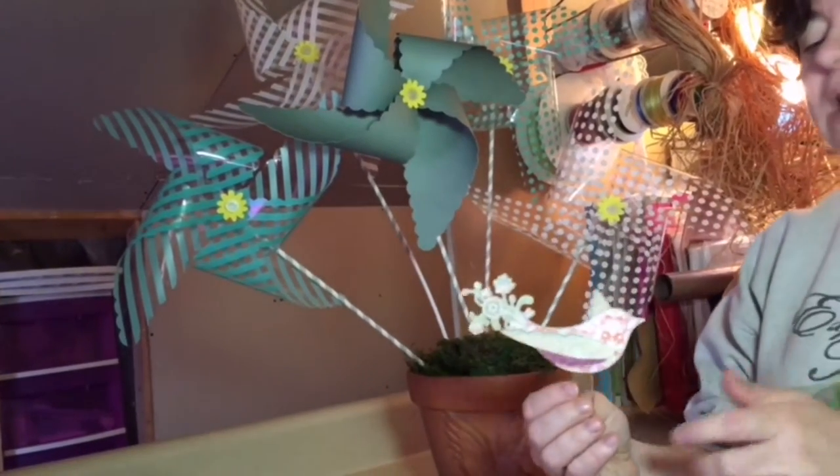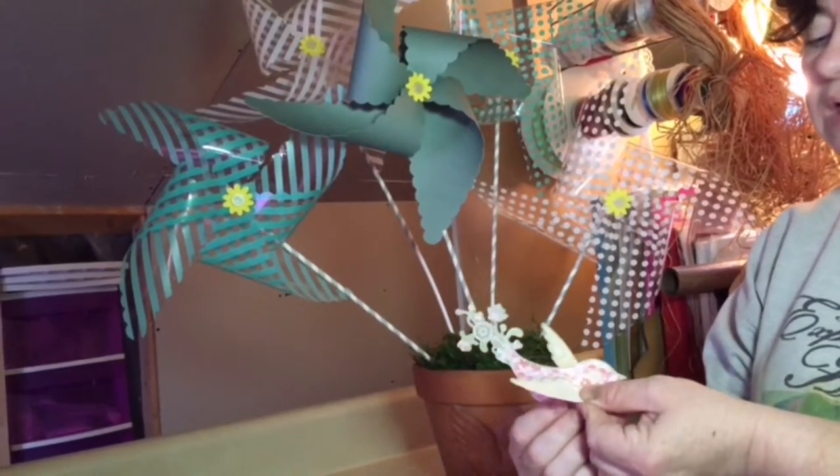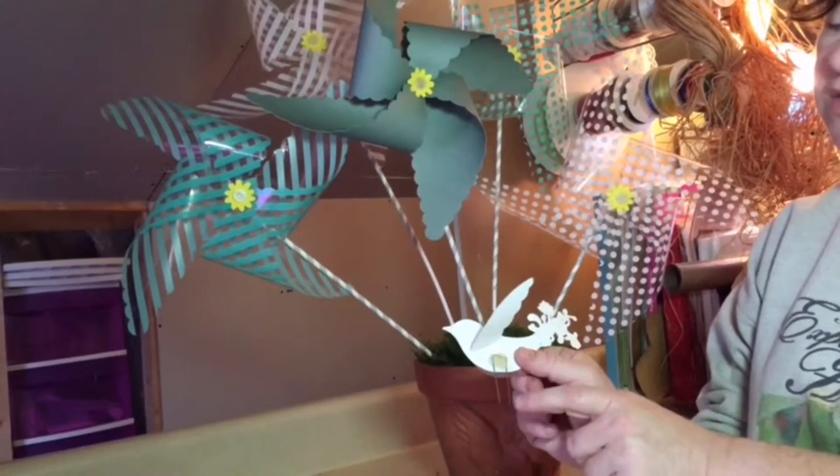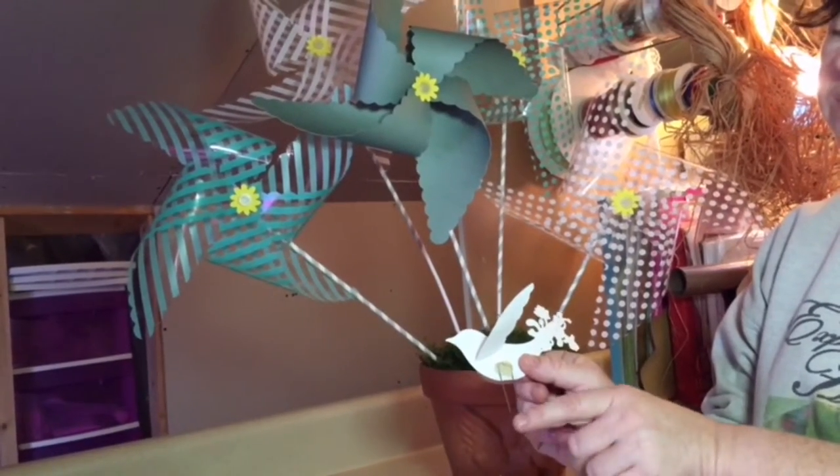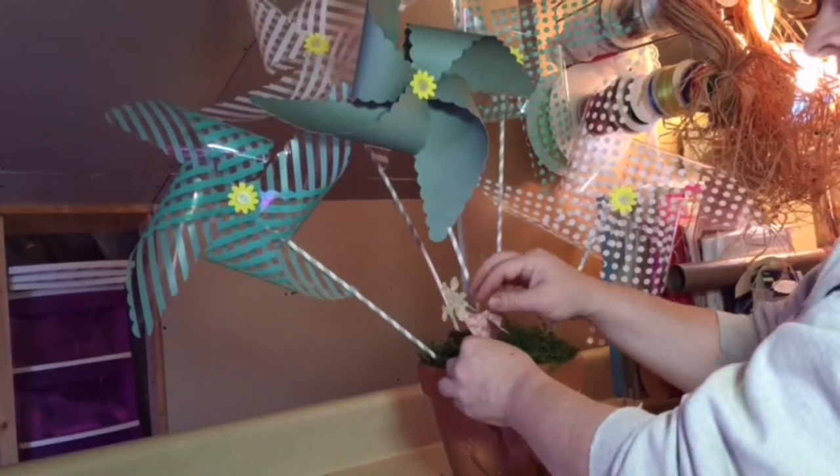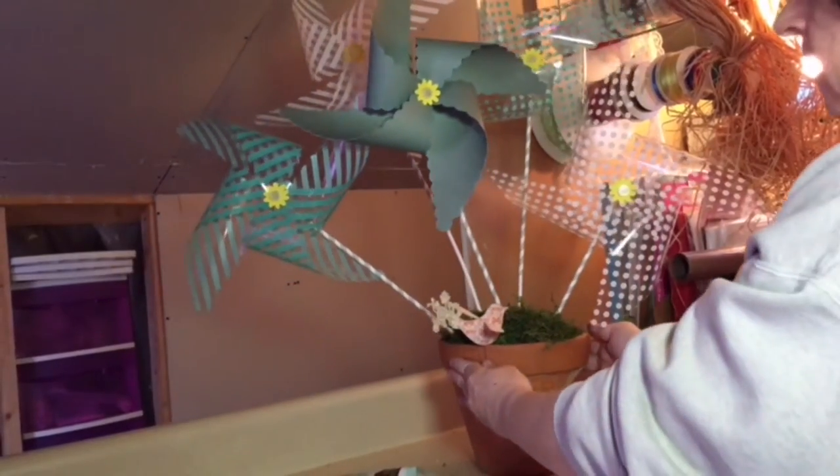This bird I cut out with my Cricut Imagine. I put the coloring on it with the Cricut and everything, and I've used a dot of hot glue to glue this florist pick on. All I'm going to do is slide it right there like that.